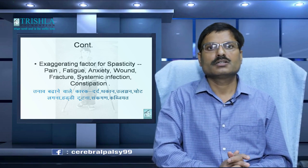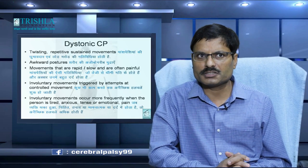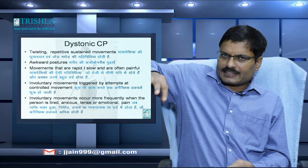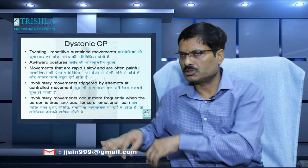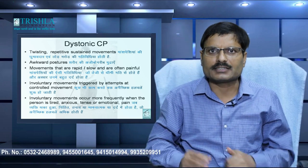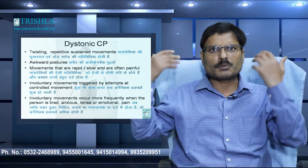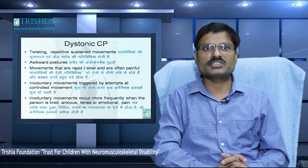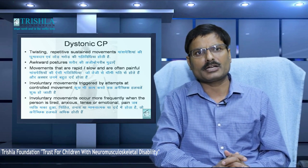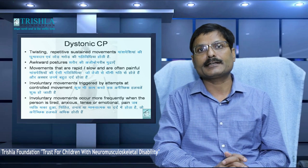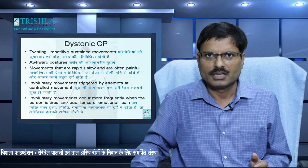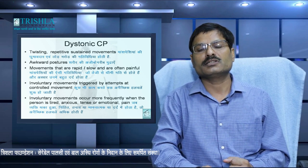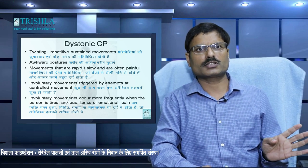Now dystonic cerebral palsy — dystonia means twisting, repetitive, sustained movement in the body, where part of or the whole body is twisted. Whenever the child is in anxiety or someone is talking to them, their tone pattern increases and the body twists more. They develop very awkward postures and movements, sometimes slow, sometimes rapid, and often painful. These involuntary movements are triggered by attempts at controlled movement — when they want to do something, the movement increases. However when the child is sleeping, the body returns to a normal pattern with no abnormal awkward positions.